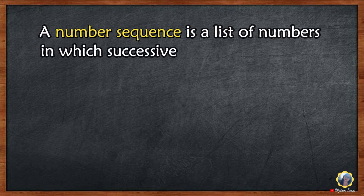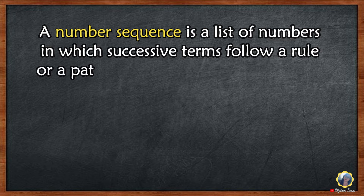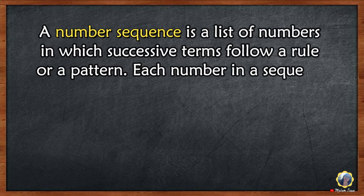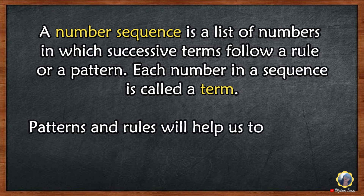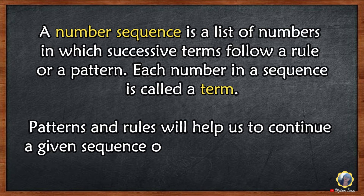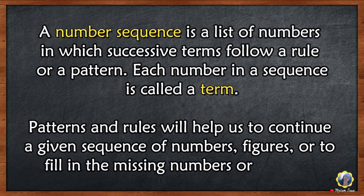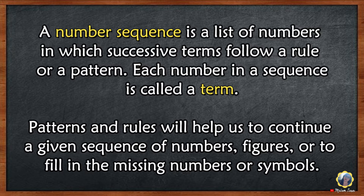A number sequence is a list of numbers in which successive terms follow a rule or a pattern. Each number in a sequence is called a term. Patterns and rules will help us to continue a given sequence of numbers, figures, or to fill in the missing numbers or symbols.